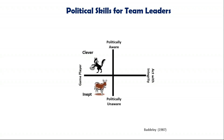Hopefully you're not a fox or a donkey — it's not a good place to be as a team leader. In the bottom right-hand corner are what we might refer to as innocent lambs: people who are politically unaware but act with integrity. They come to work, do a good job, keep their nose clean, and rationalise that they're not interested in politics — just here to do the job they're paid to do. It's not wise to be a lamb because, if you're a team leader, you are in some way involved in politics.